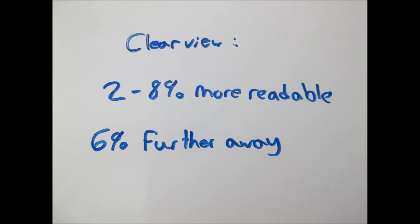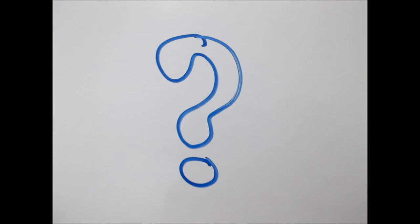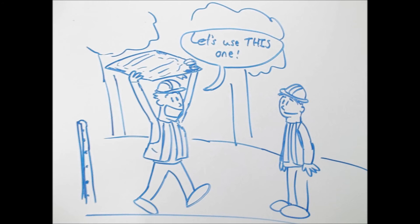That sounds great, of course, but over time it was found that these tests were skewed. Why? Because the signs written in highway gothic were just old signs that the researchers decided to use, and Clearview's signs were all completely new.